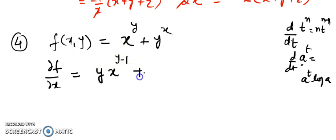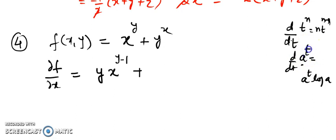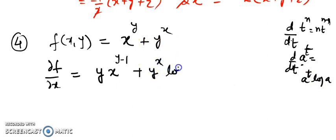Plus: for y^x, here y is in the base and is constant, and x is the variable. So this is constant to the power variable, which matches a^t formula. The answer is y^x · log(y).